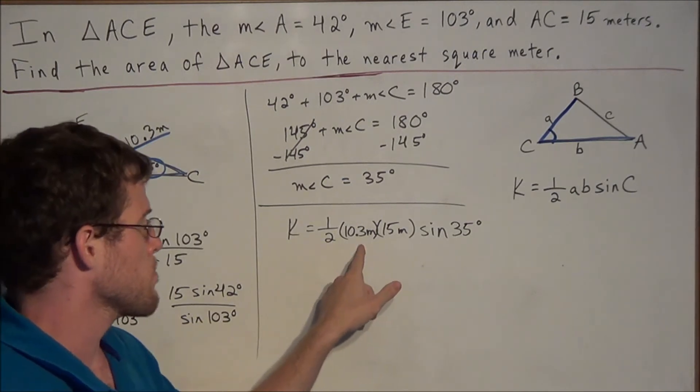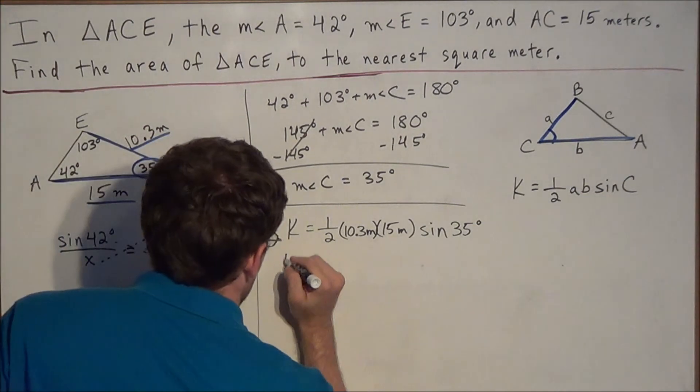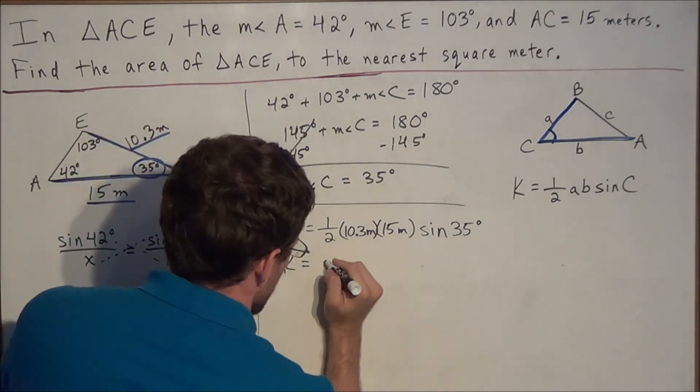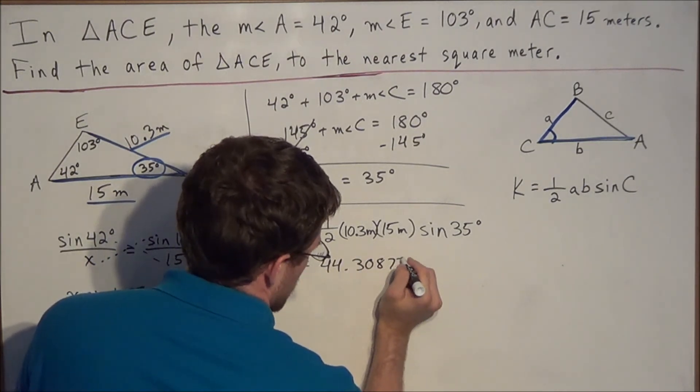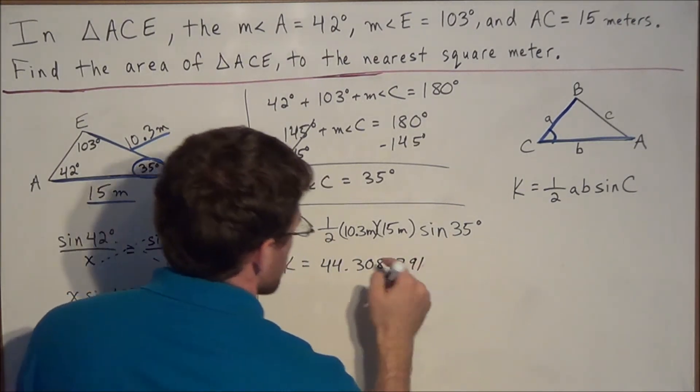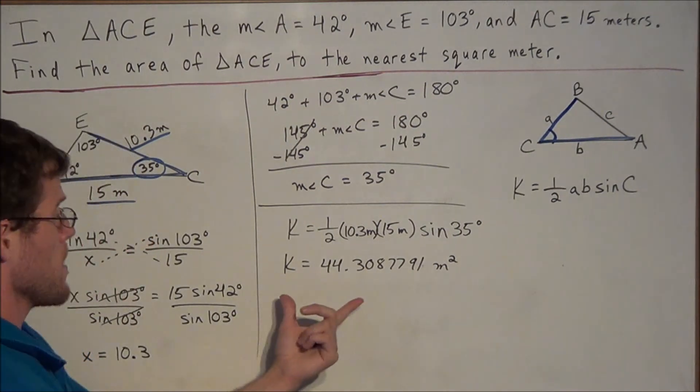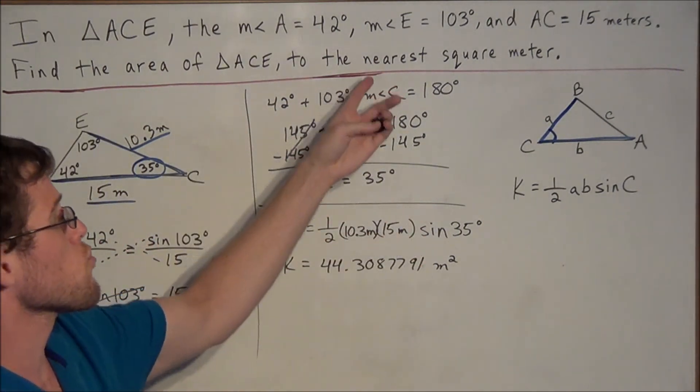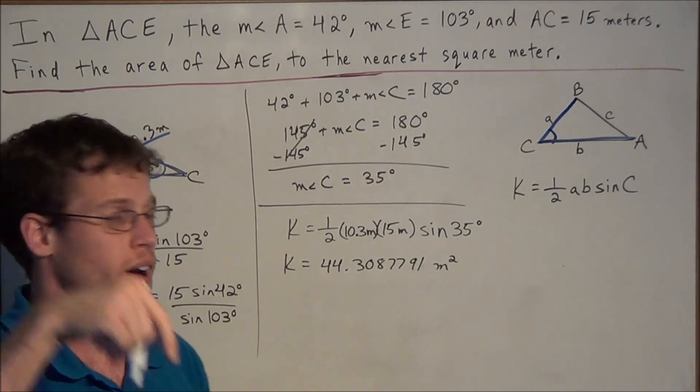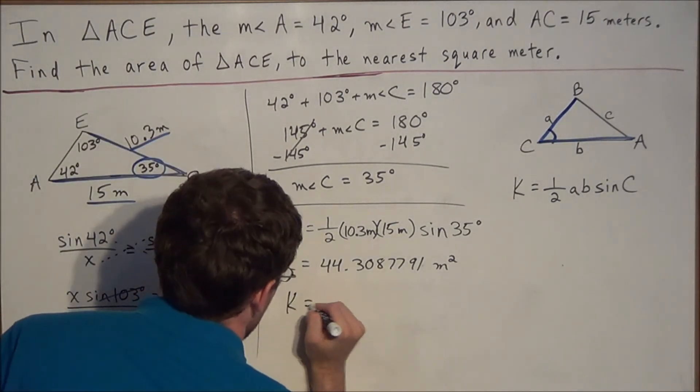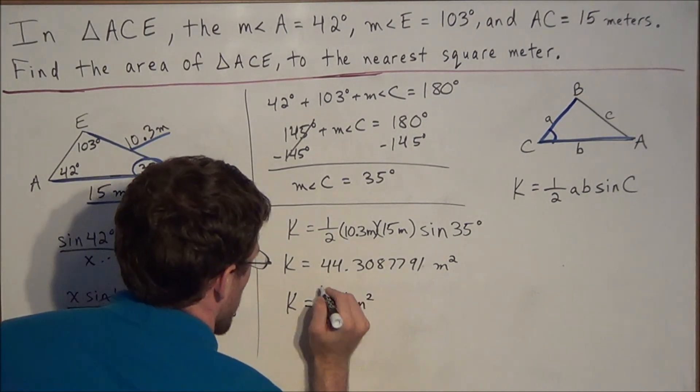So now this expression, you could type in a calculator all at once, you could do 1/2 times 10.3 times 15 times sine 35. And it should work out to, you'll get 44.3087791. And remember the unit, we have meters times meters, which is meters squared, or square meters. So the last step is to round to the nearest square meters. So since we have 44.3, we're going to be rounding down to 44. So our final answer, K, the area of the triangle is equal to 44 square meters.